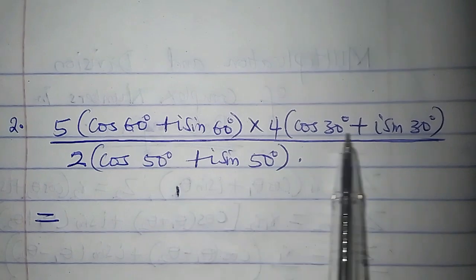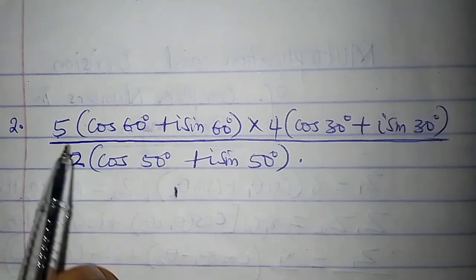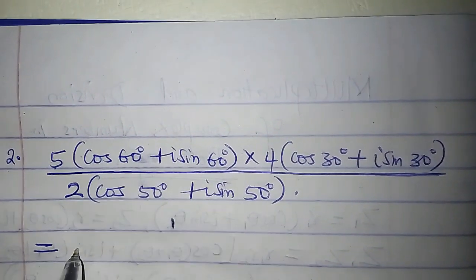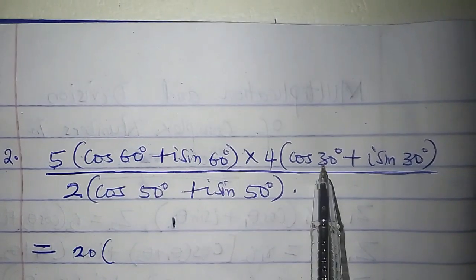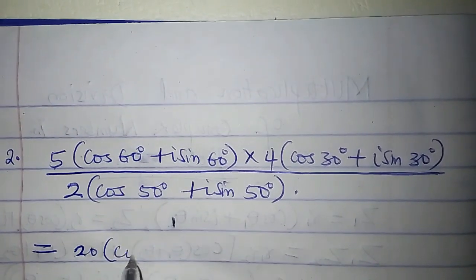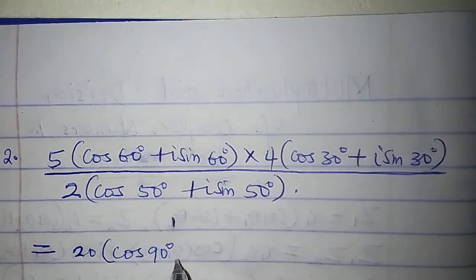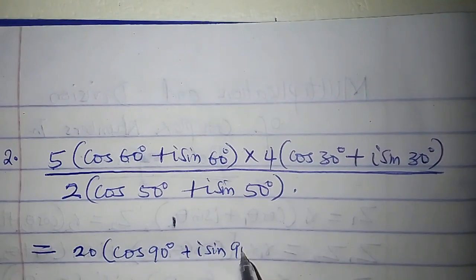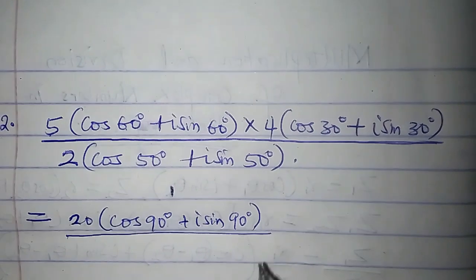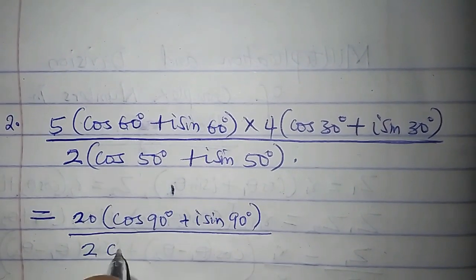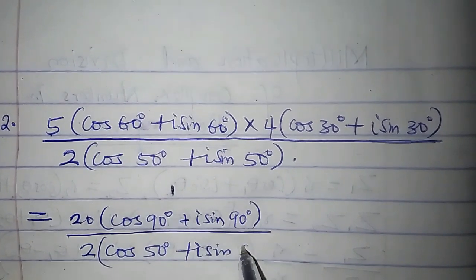The multiplication principle will be applied to the expression in the numerator. So it will be 5 times 4, which is 20. I will add their arguments: cos(60 + 30)° is cos 90°, plus i sin 90°. Divided by 2 times cos 50° + i sin 50°.